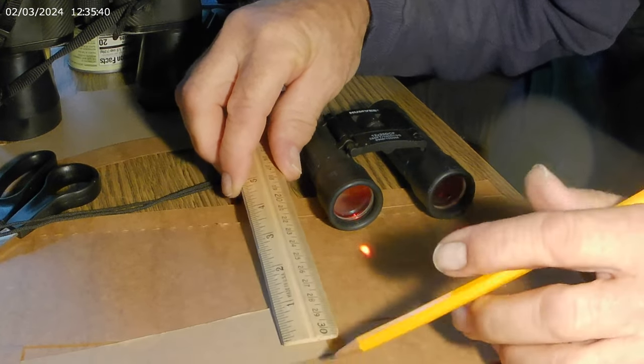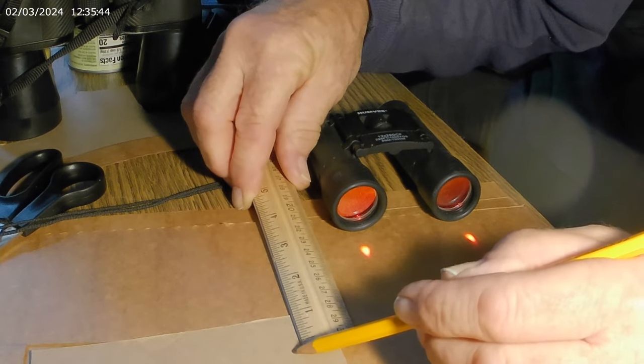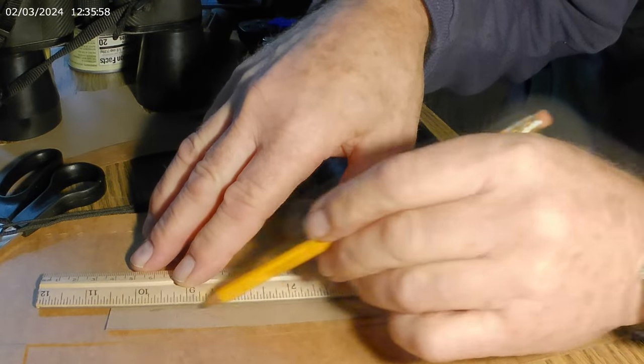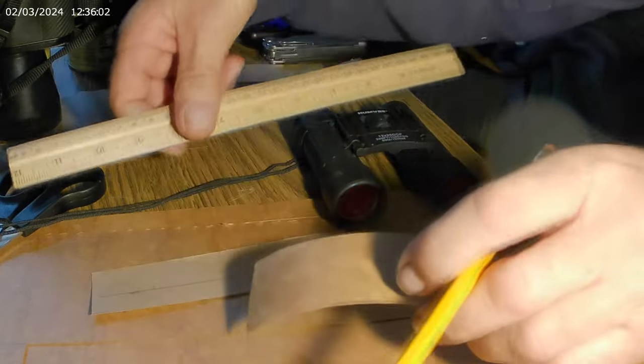For this, you can use cereal box cardboard. And what you'll do is you'll cut strips that are about an inch and a half wide, and you want to have an inch overlap going up onto the binoculars.